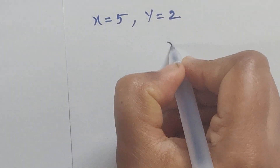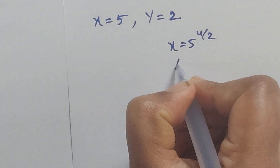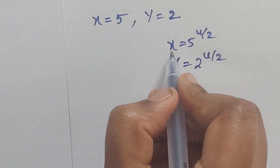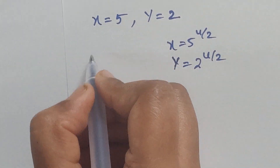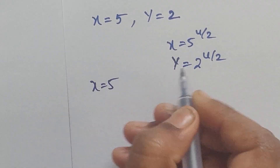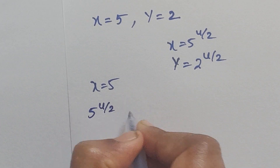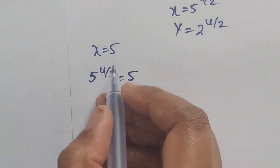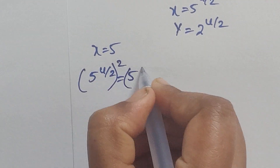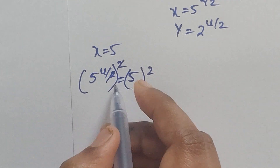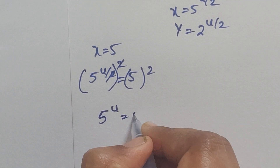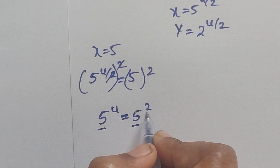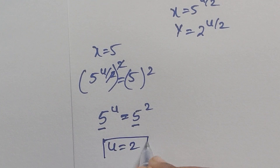We got x equals 5 and y equals 2. We know that x equals 5 to the power of u/2. So 5 to the power of u/2 equals 5. Applying squares on both sides, the 2 in the denominator cancels, giving 5 to the power of u equals 5 squared. Since the bases are the same, u equals 2.